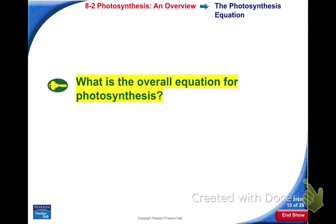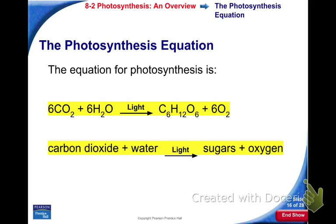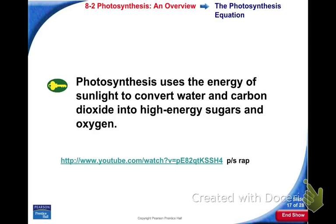Do you know the overall equation for photosynthesis now? We've spent a lot of time reviewing the same equation. You need to know this equation in words and in symbols. The key idea is that the process of photosynthesis is used to convert sunlight energy along with water and carbon dioxide into a sugar.